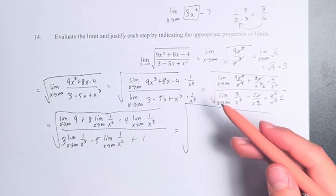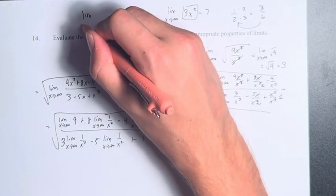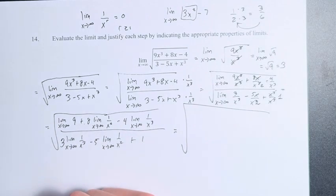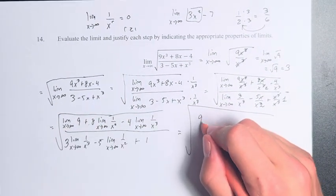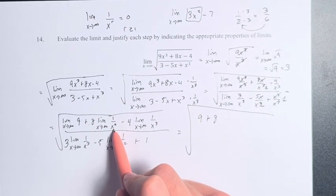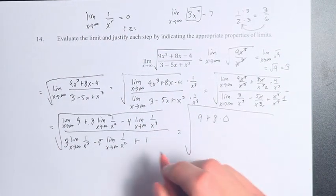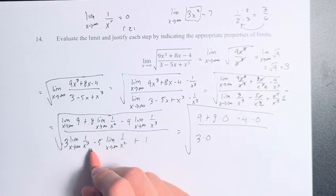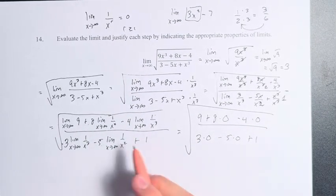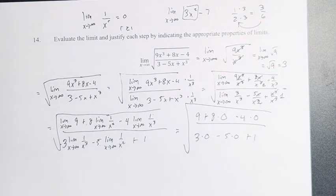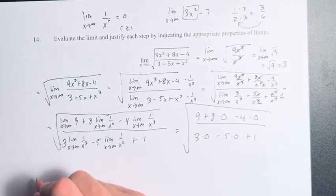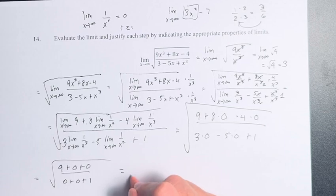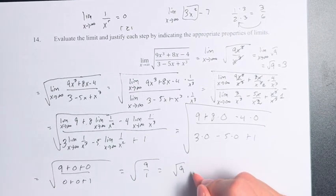Why multiply by 1/x³ in the first place? Because we know that the limit as x approaches infinity of 1/x^r equals 0 when r is greater than or equal to 1. So every term with 1/x² or 1/x³ goes to 0. This gives us 9 plus 0 minus 0, over 0 minus 0 plus 1, which equals the square root of 9 over 1, the square root of 9, which is 3.